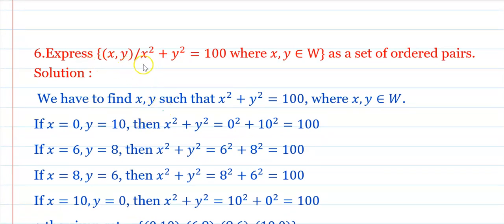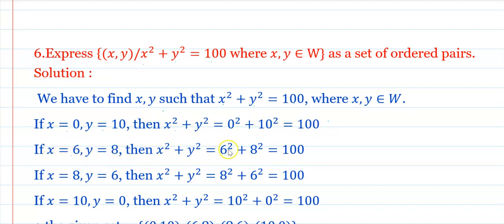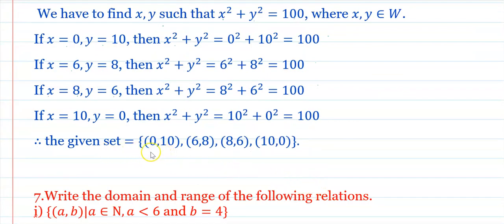Question 5: Express as a set of ordered pairs: {(x,y) : x² + y² = 100, x, y ∈ W}. When x=0, y=10: 0+100=100. When x=6, y=8: 36+64=100. When x=8, y=6: 64+36=100. When x=10, y=0: 100+0=100. Therefore the set of ordered pairs is {(0,10),(6,8),(8,6),(10,0)}.